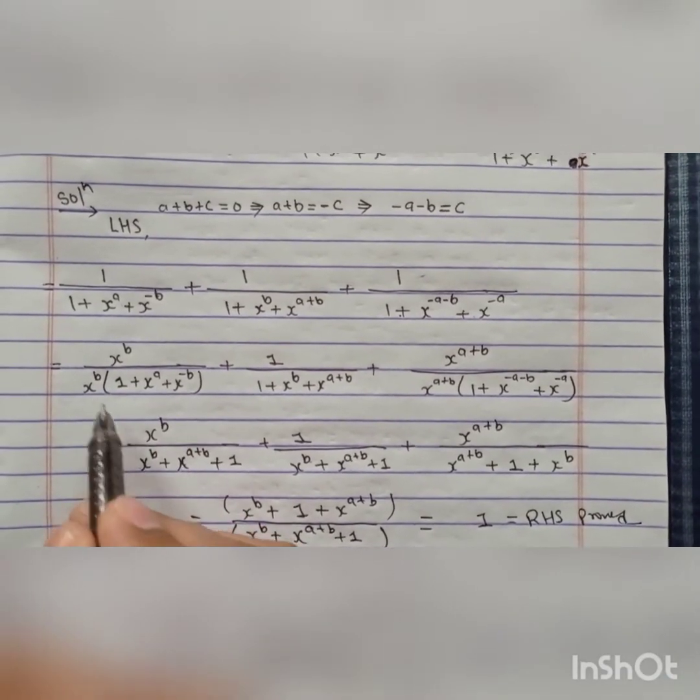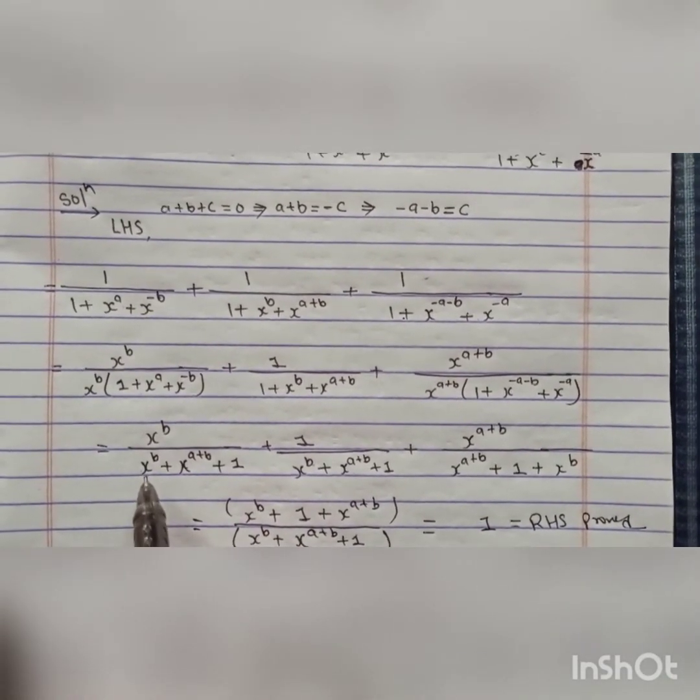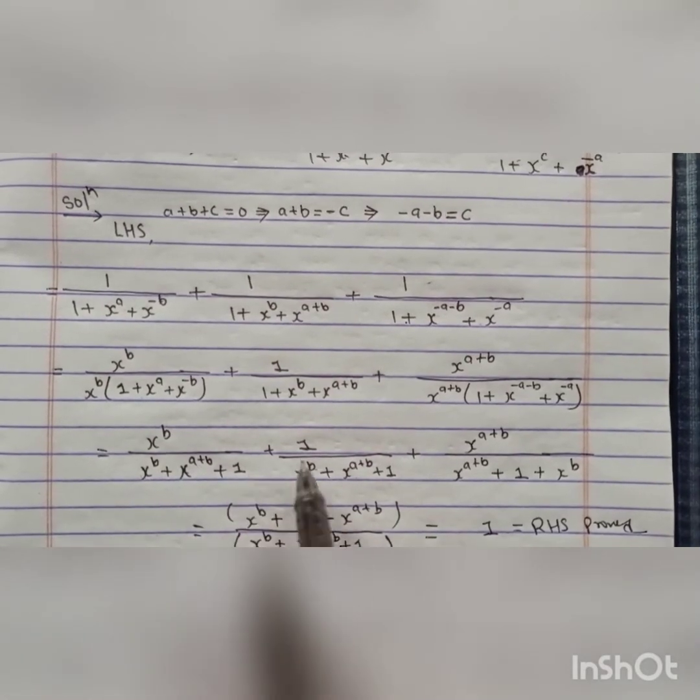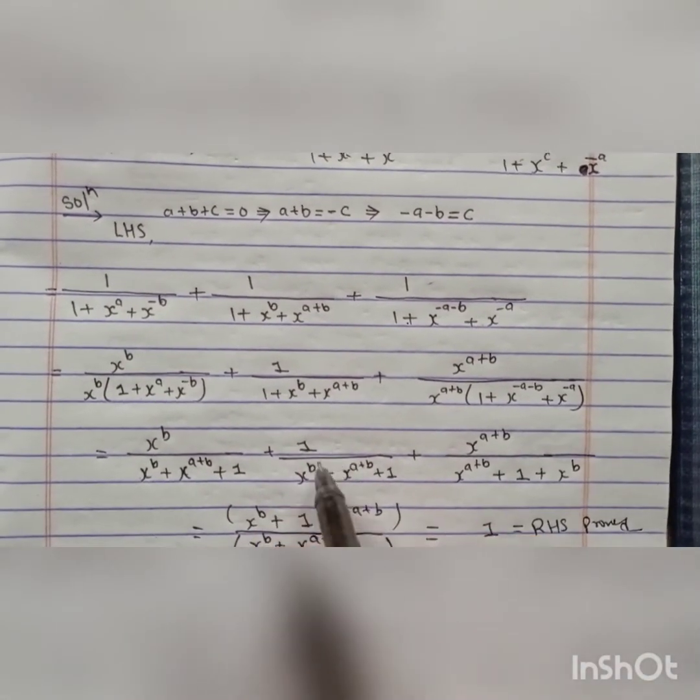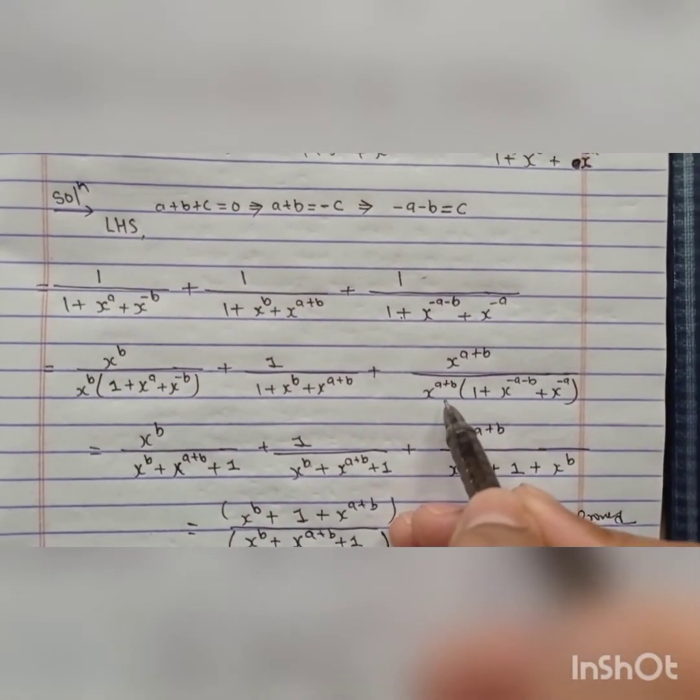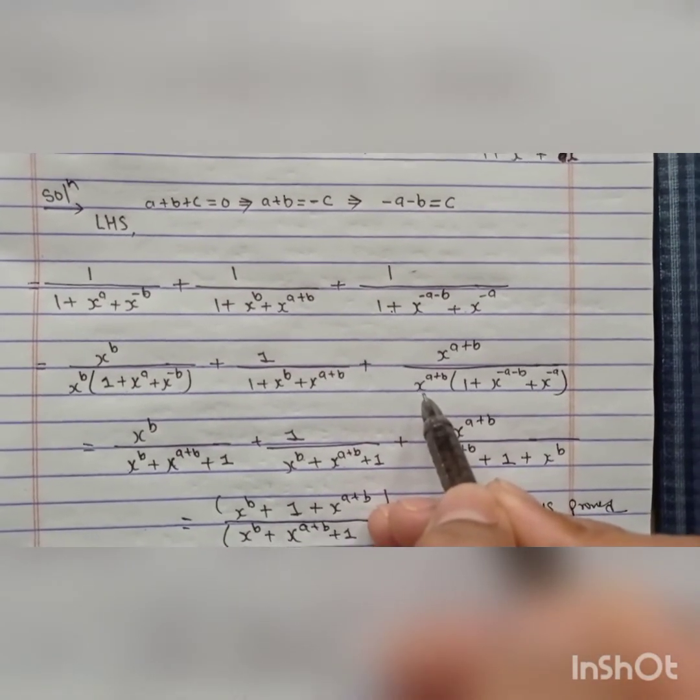After doing this, you get x to the power b here. If we open this bracket by multiplying this term by x to the power b, we get x to the power b plus x to the power a plus b plus 1. Copy it as is, and here if you open this bracket by multiplying by x to the power a plus b, we get this.